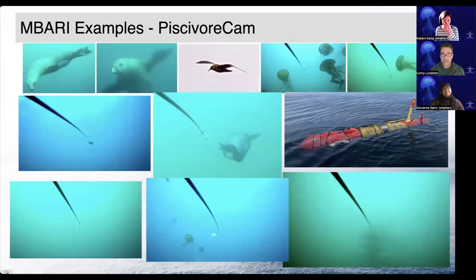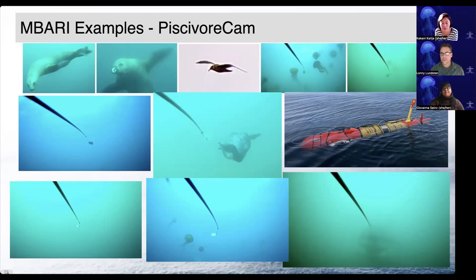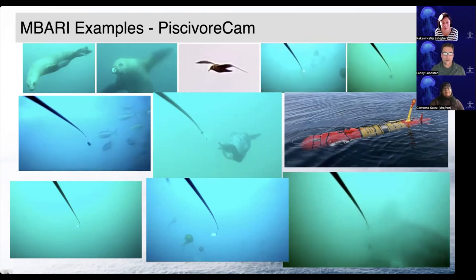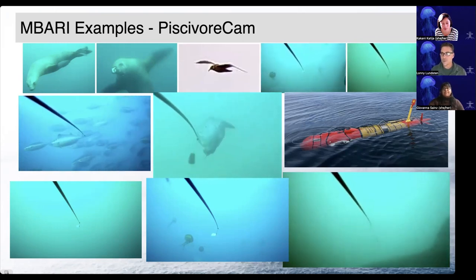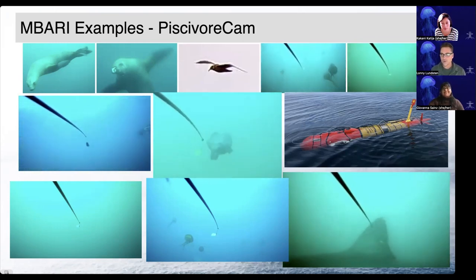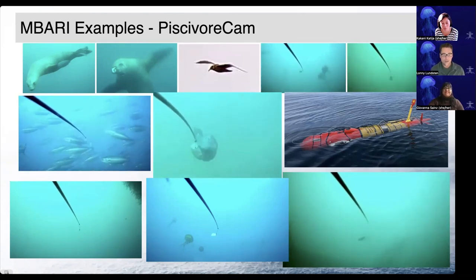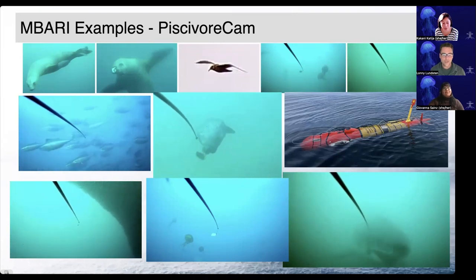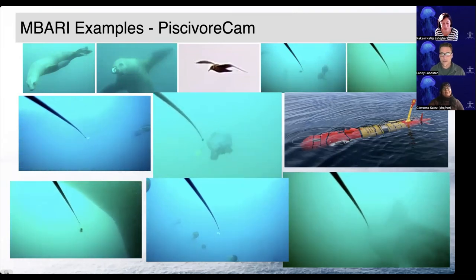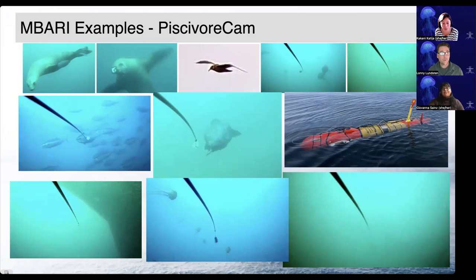Here's an example of what we're seeing — the AUV is shown on the right. We're seeing jellies, birds, sharks. The model can detect birds in flight, birds underwater, and birds bobbing at the sea surface when we can only see their feet. We also see schools of fish — big schools of anchovies and things like that. It's been pretty successful.